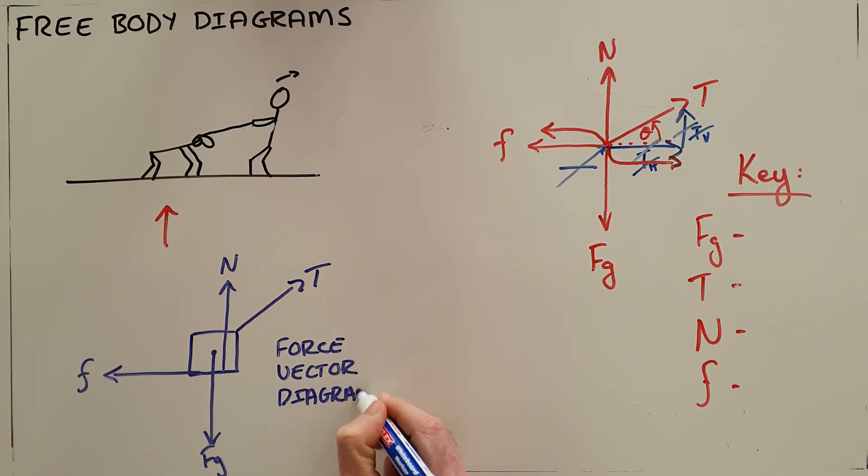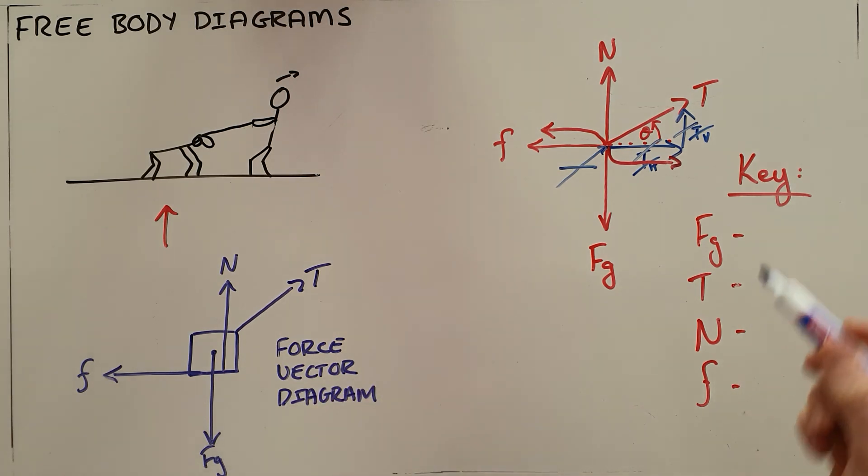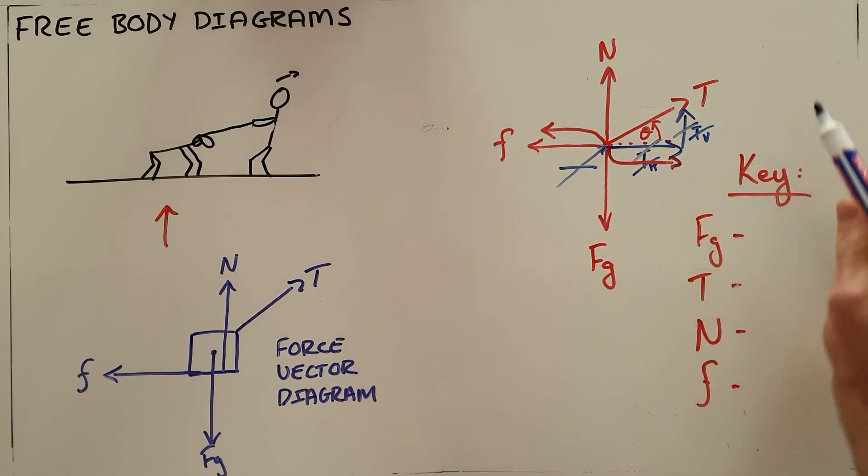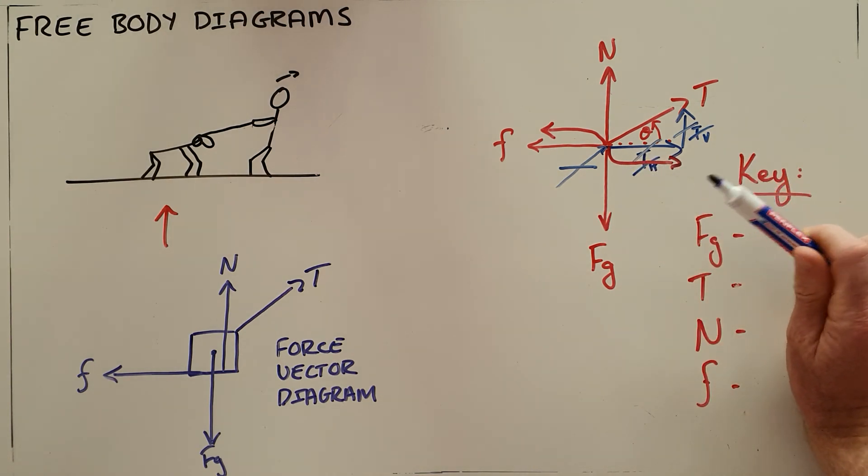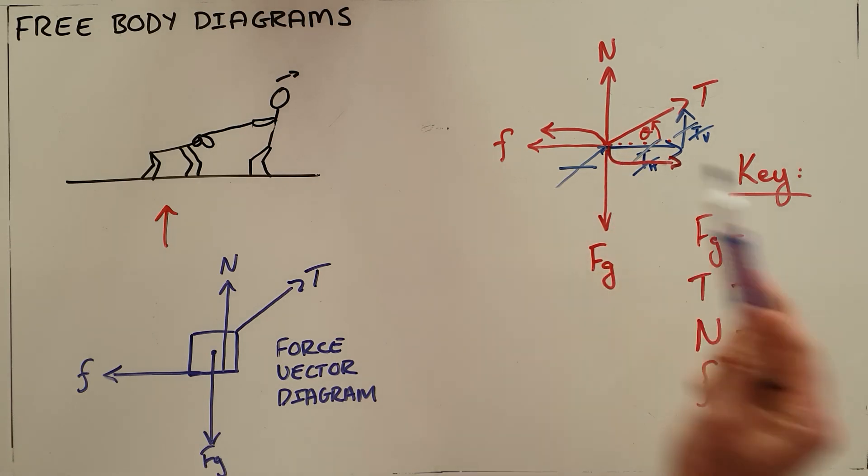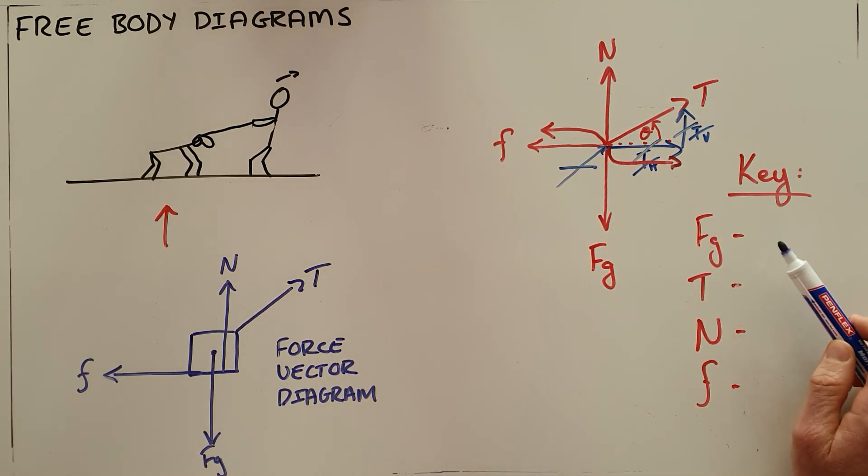But once again, the free body diagram is the far more common one where you show vectors only pointing away from the diagram. You show the object as a center of mass or as a single dot and represent it with a key, and you make sure that you do not ever show any components of forces on that diagram.